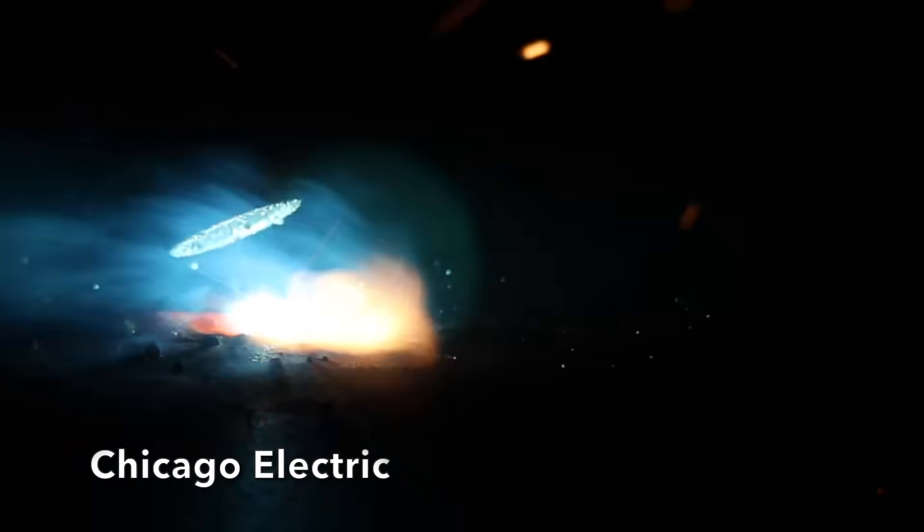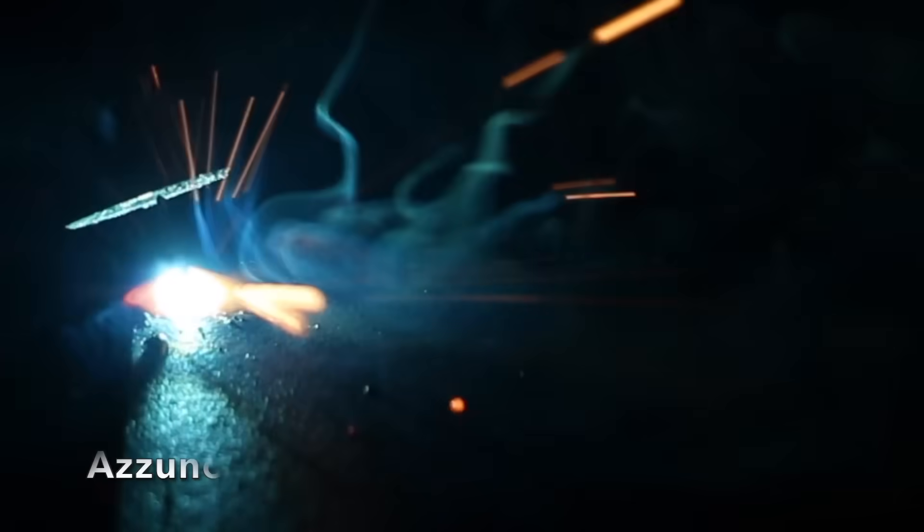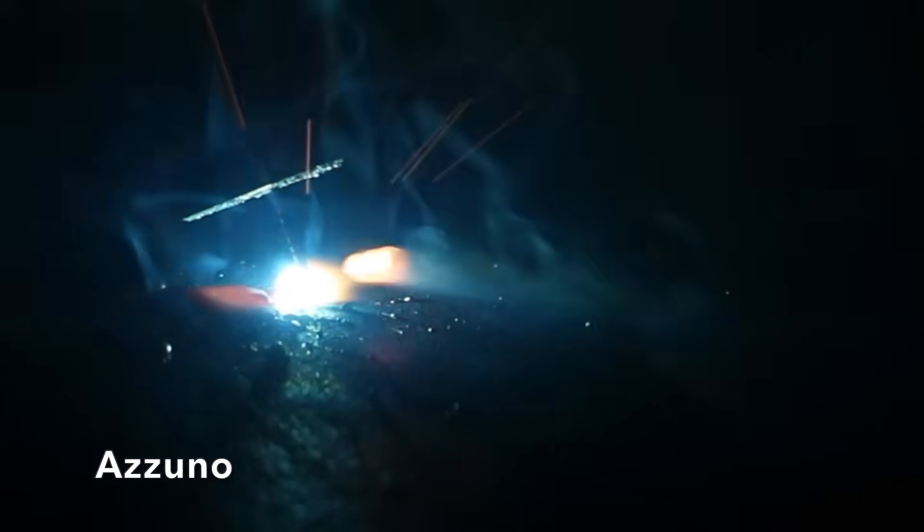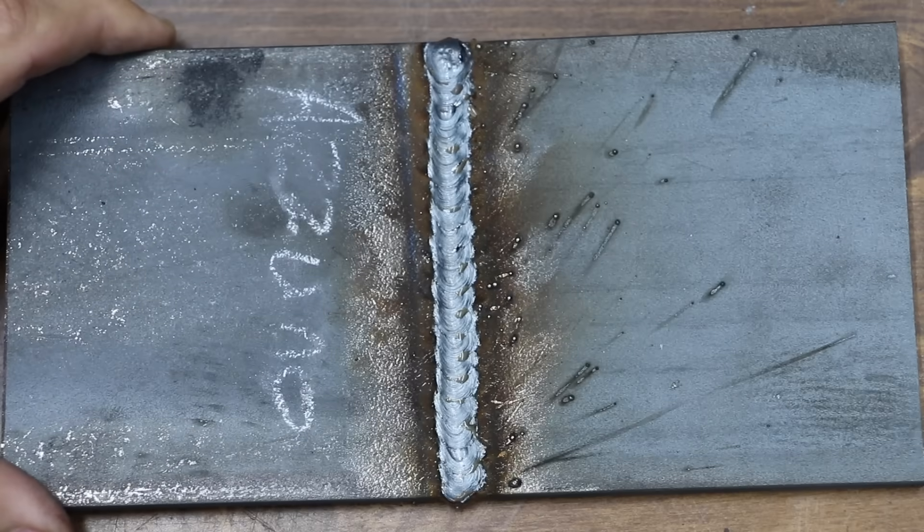And the Chicago Electric is creating more wire speed than the flame weld, but the wire speed is fluctuating quite a bit. And the Izuno does skip a little bit as the wire is feeding through it, but considering the price of the welder, it does offer a pretty decent weld.